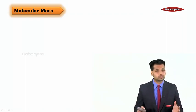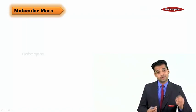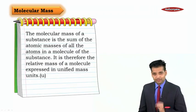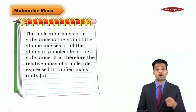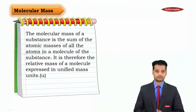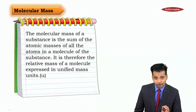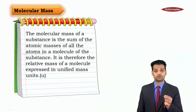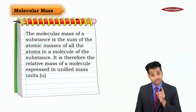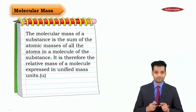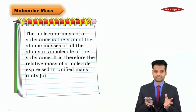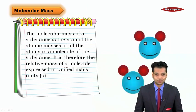It is of no use to take H2O then compare it to carbon-12 atom. So the molecular mass of a substance is the sum of the atomic masses of all the atoms in a molecule of the substance. It is therefore the relative mass of a molecule expressed in unified mass units (u). The molecular mass is just addition of all the atomic masses of the same molecule.